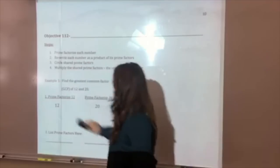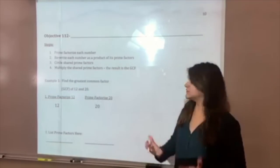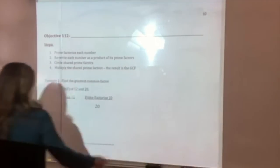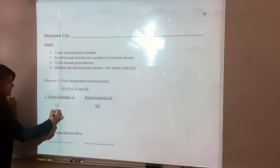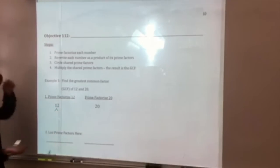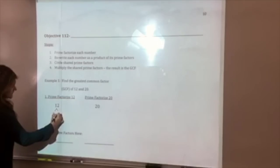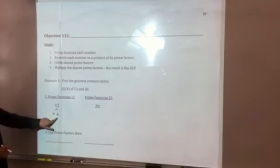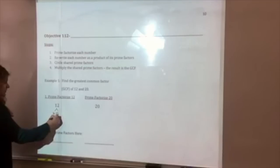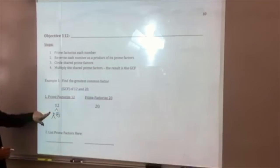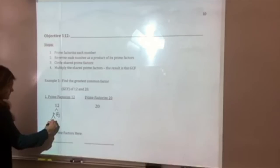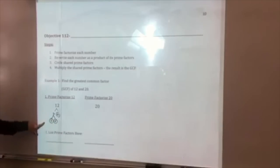The first step is prime factorize each number. Again, we're just using this method. So for 12, we are going to break it down into primes. You can choose any factors you'd like. I'm going to choose 6 and 2. I notice that 2 is prime, so I'm going to go ahead and circle it. I'm going to continue breaking down 6 because it's still composite. Here we can do 3 times 2. And now I have 2 and 3, which are both prime, so I'm going to go ahead and circle it.